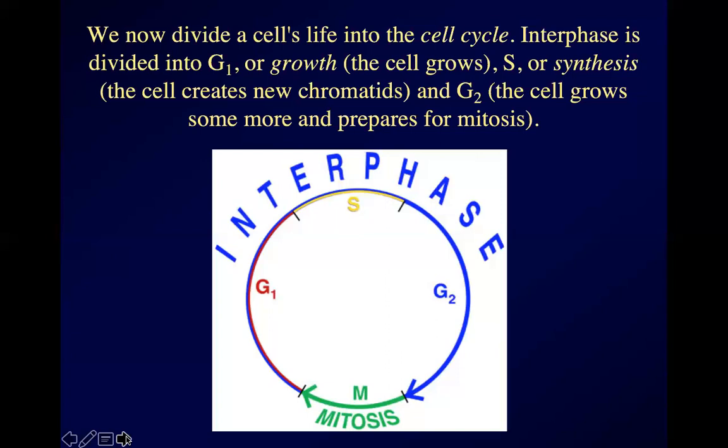The S phase is when the cell creates new chromatids. We can't yet see how it does it, because in interphase the chromosomes aren't visible as separate units. We will talk later as to why we can't see them. For right now, you just need to know that they're there, but we can't make them out during interphase.